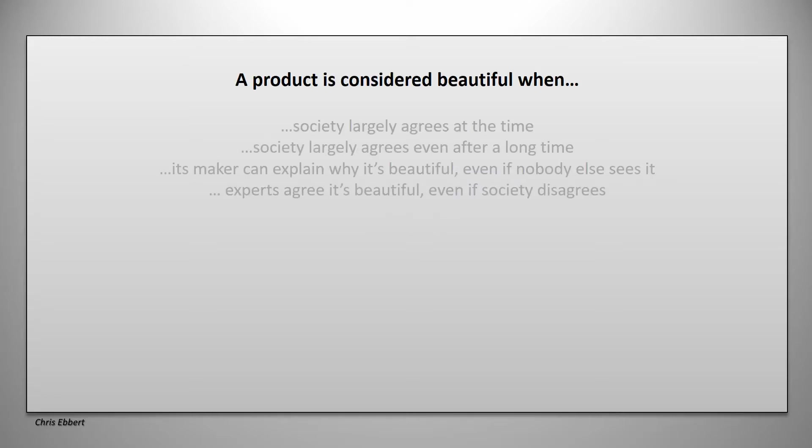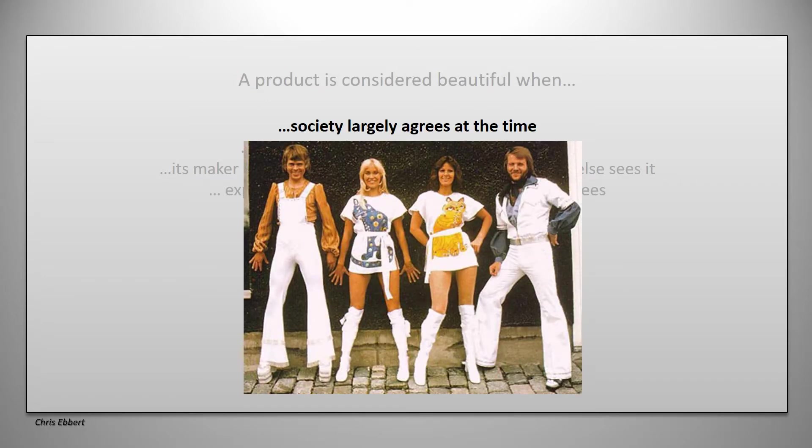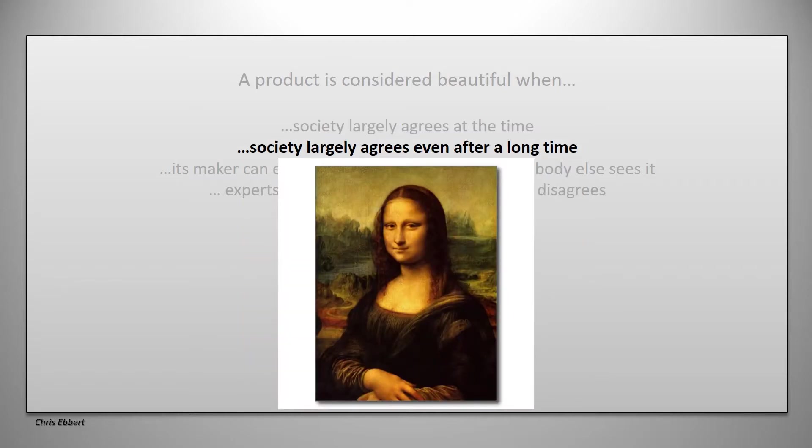So let's go to this actual point of beauty. Is it beautiful? How can we make an object beautiful? I think there is a bit of a recipe for this. I think it's beautiful when society largely agrees at its proper time that it's beautiful. These are ABBA. And they used to be considered really beautiful people at the time, also with that dress. Now, I think our tastes have moved on a little. So what I'm trying to say with this is that beauty can be a temporary thing. Sorry about that.